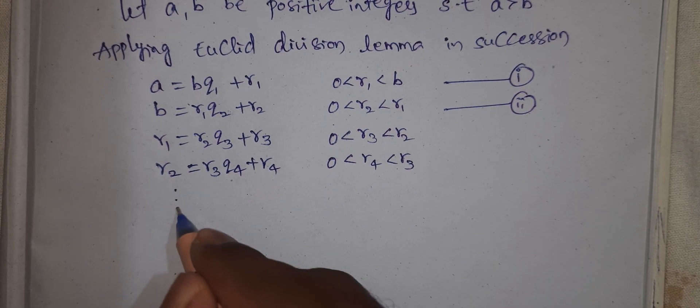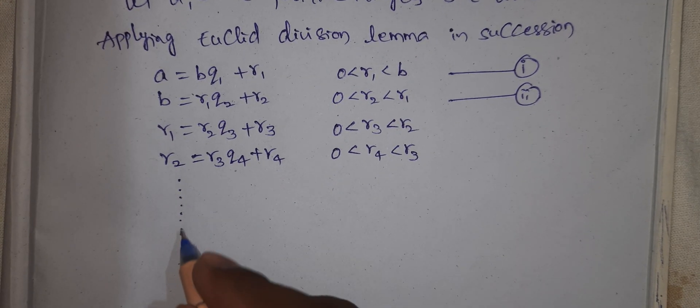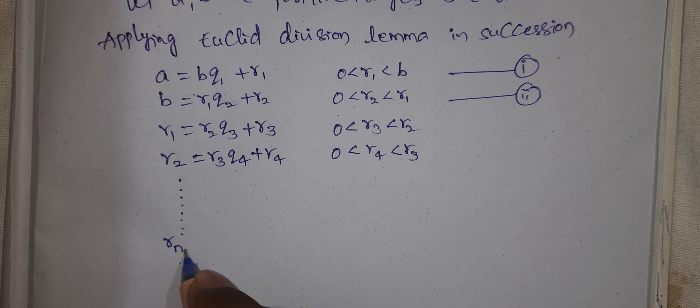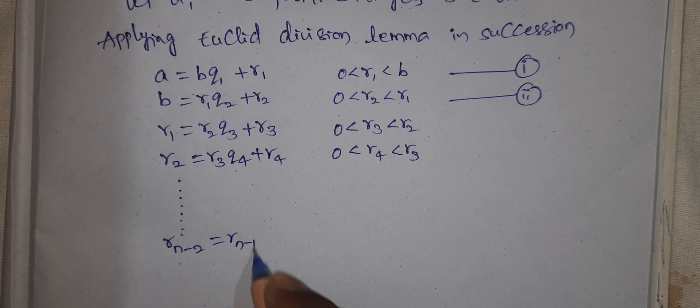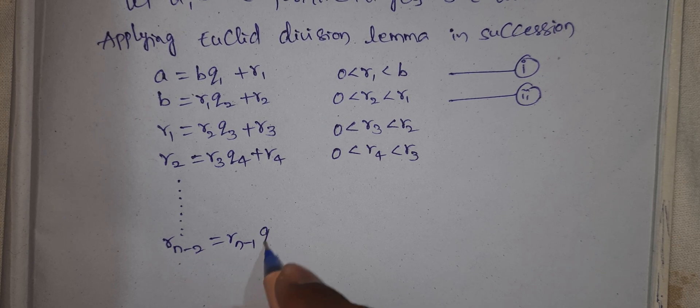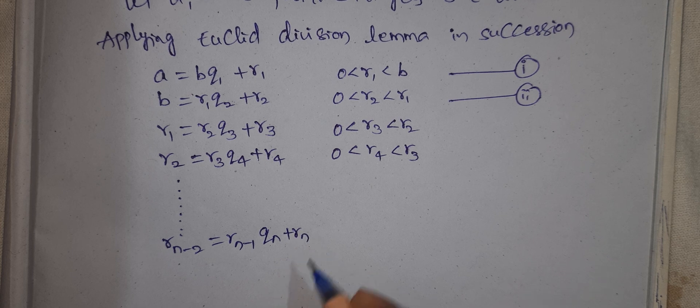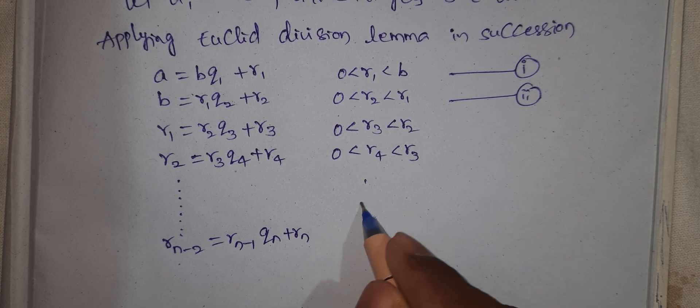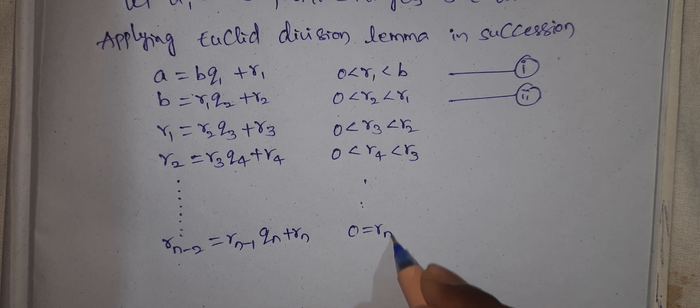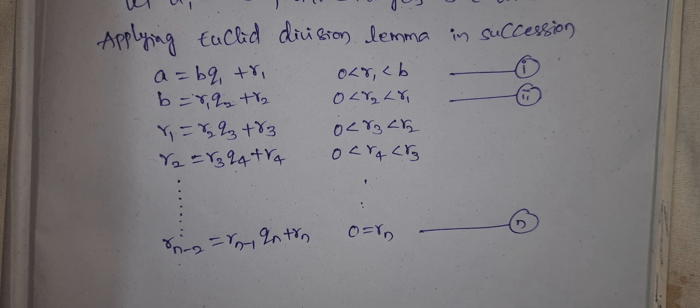So on. Now see, Rn minus 2 equal to Rn minus 1 Qn plus Rn, so on, 0 equal to Rn. This is nth equation.